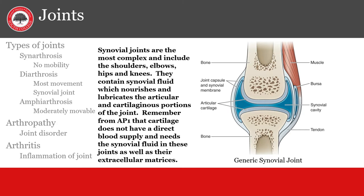Recall the joints of the body from AP1: which joints are synarthrosis or immobile, and diarthritic or very mobile, like synovial joints. Synovial joints are the most complex and include our most important joints like knees, elbows, shoulders, and hips. Synovial fluid nourishes and lubricates the joint.